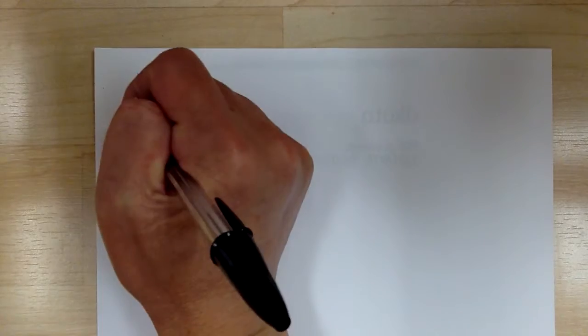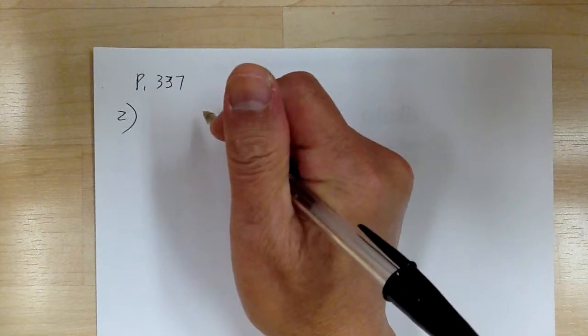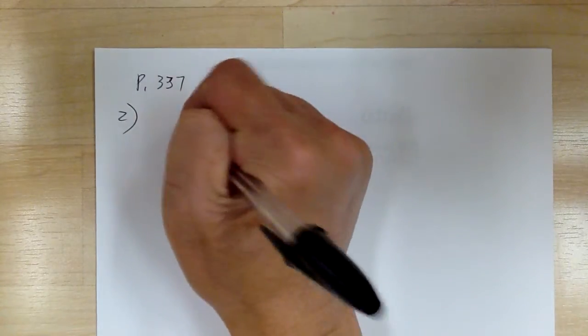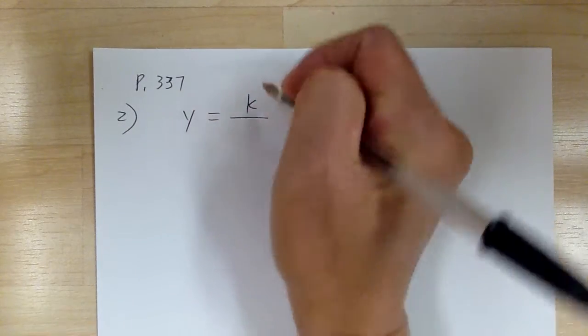Open your book to page 337, and let's go to number 2. As you read, you need to translate, and again, write down as you read. It says if y, so y varies inversely means equal to k over something. Again, whatever is inversely goes on the bottom.